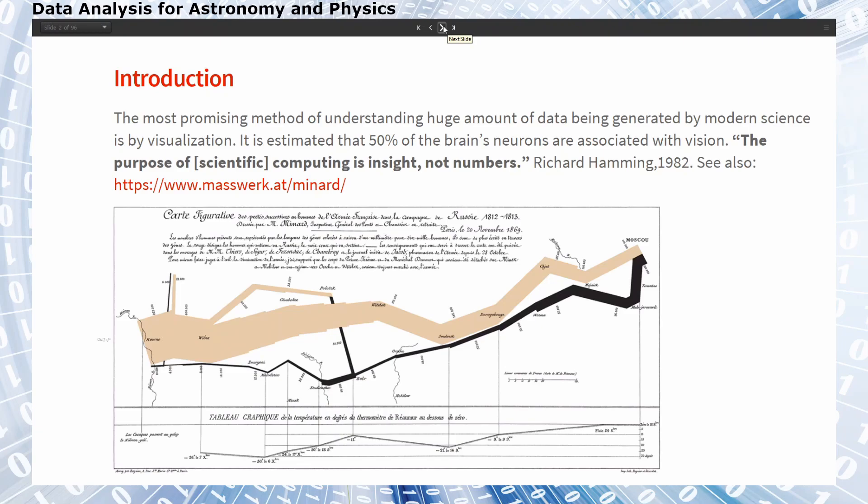It is an n-dimensional data visualization showing for example the size of the army on the way to Moscow. This is the thickness of the light brown areas here in the plot and on the way back from Moscow to France.